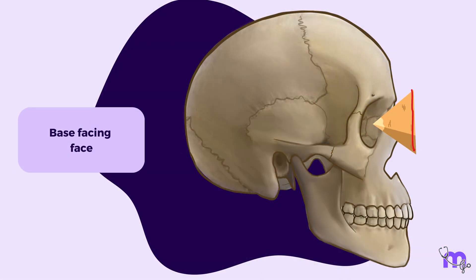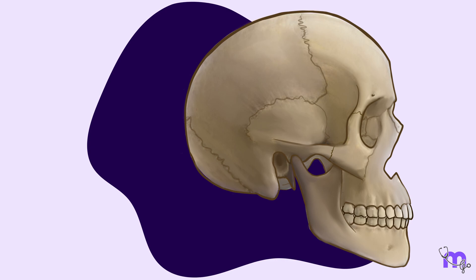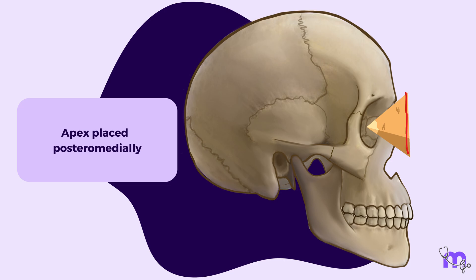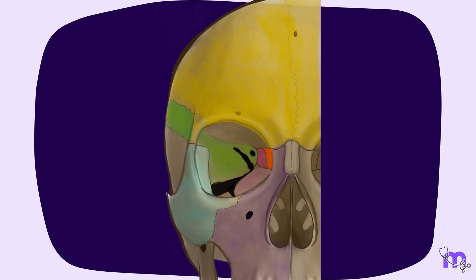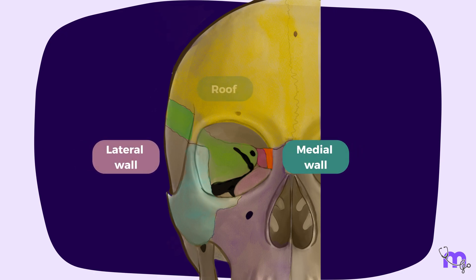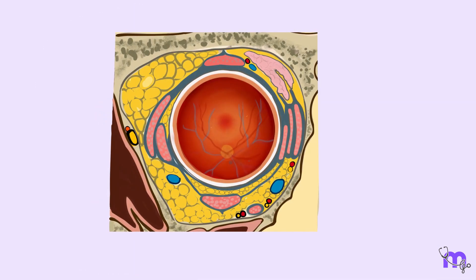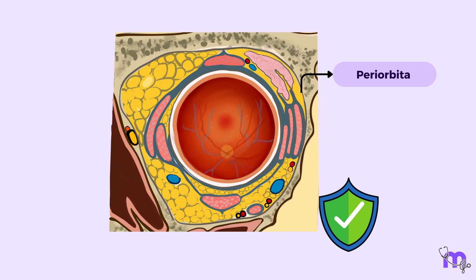The base of this pyramidal structure opens towards the front, facing the face itself. The apex projects inward, pointed posteromedially towards the centre of the skull. The boundaries enclosing this pyramid are constituted by the medial wall, lateral wall, roof, and floor. Lining the inner surfaces of these walls is a connective tissue called periorbita, which adds an extra layer of protection.